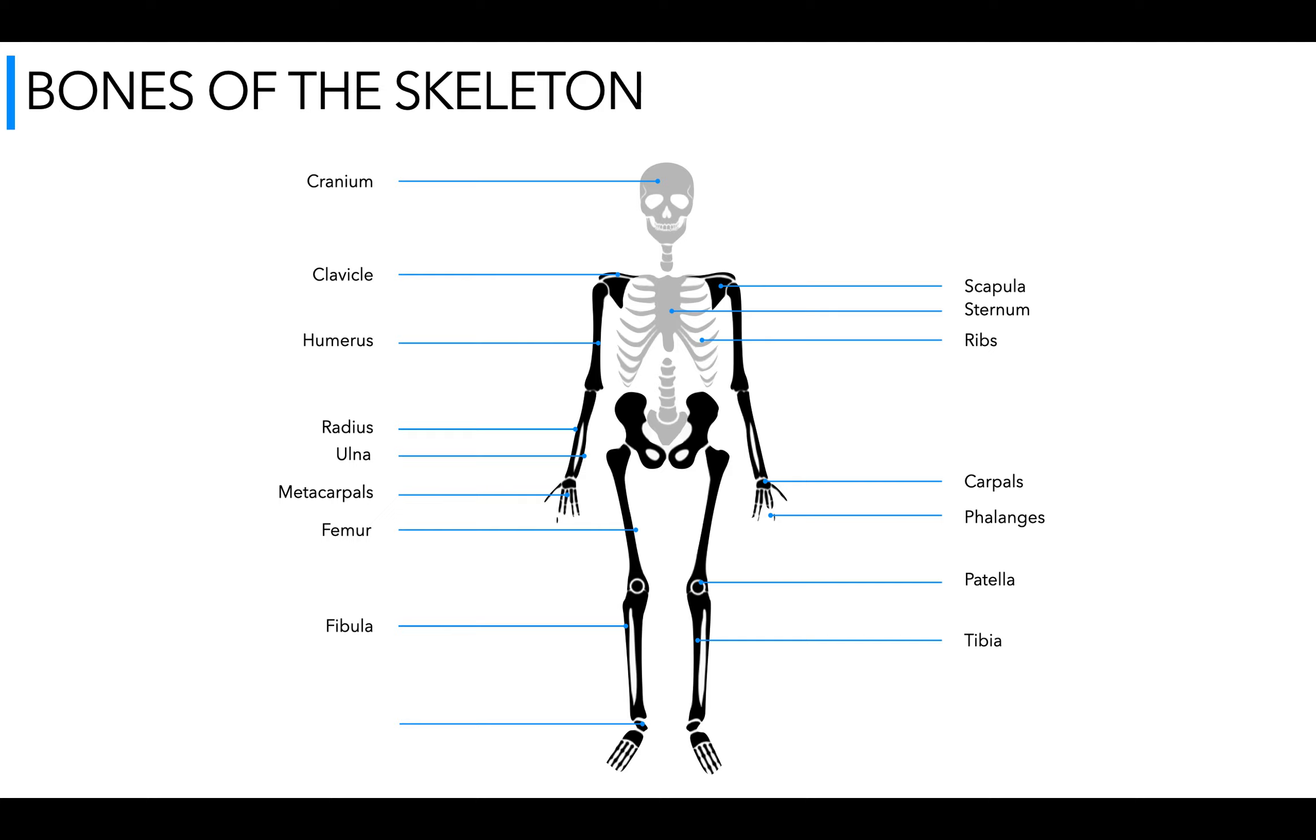A bone that you may not have covered at GCSE but it is known as one of the articulating bones of our ankle joint and that is the talus. So we have the tibia, fibula and the talus making up our ankle joint. Then similar to the hand we have tarsals instead of carpals but we have metatarsals and again the phalanges.